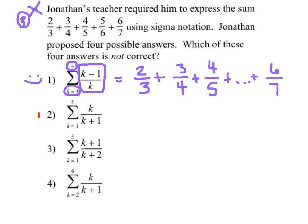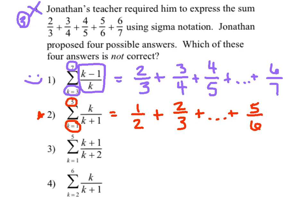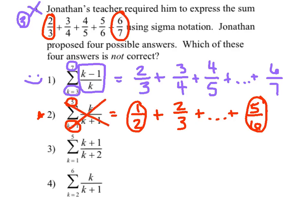Now let's try number two. Start with k equals one, substitute it in, and I get one over two. Red flag right there — the first term doesn't match. Going up, the next term would be two thirds, and fast forwarding to the last term with k equals five gives five over six. The first term doesn't match the original and the last term doesn't match either. So this one is a real dud.